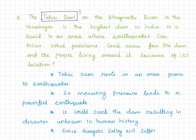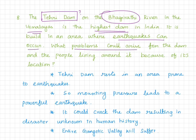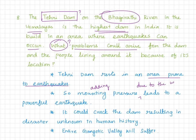The Tehri Dam is the highest in India, but it was built on an earthquake-prone area. What problems could arise for the town and people? The mounting pressure on the reservoir could lead to a powerful earthquake. It could crack the dam, resulting in a disaster unknown in human history — the entire Gangetic valley would suffer.